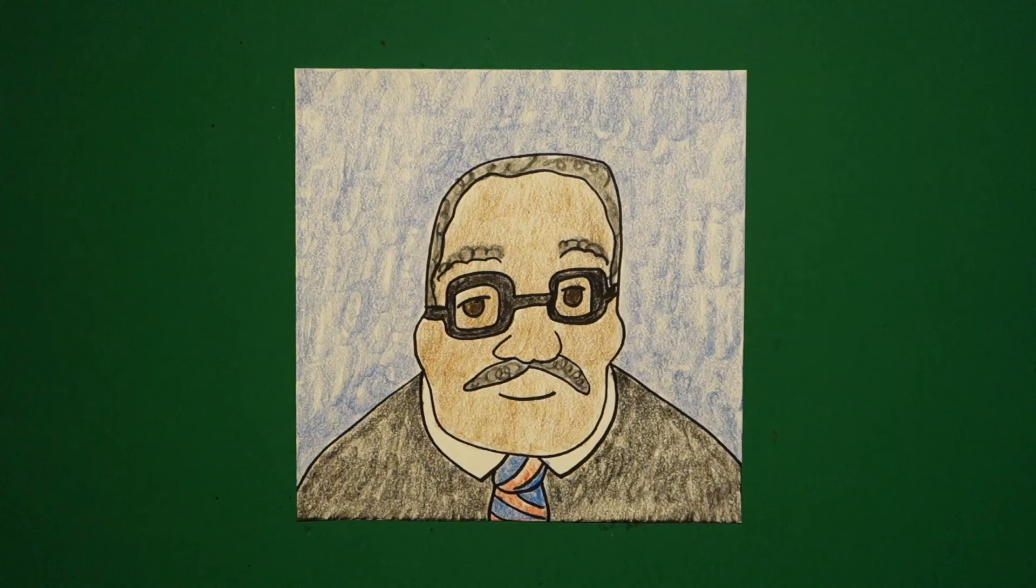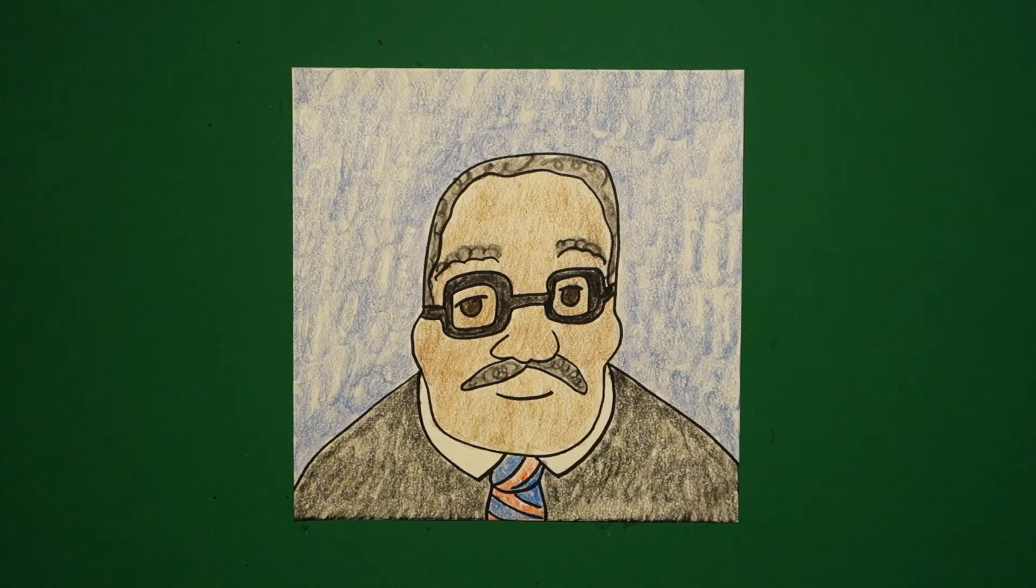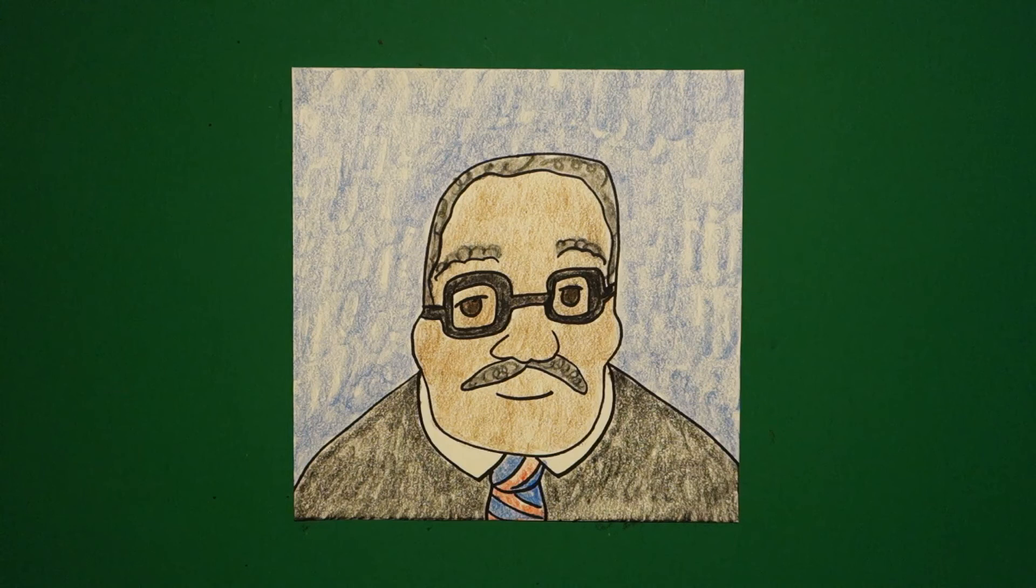Let's see what he looks like all colored in. Here is Thurgood Marshall, all colored in. He was the architect of the legal strategy that ended segregation in our country and was very important for racial equality during the Civil Rights Movement. A true American hero. Okay, bye-bye.